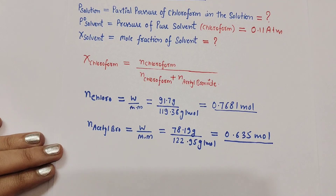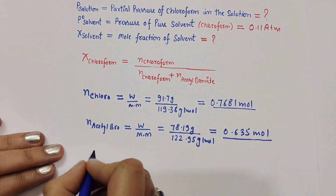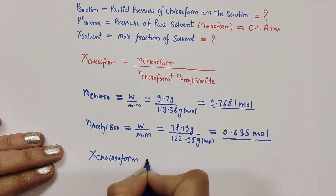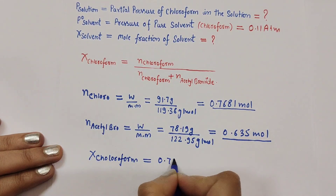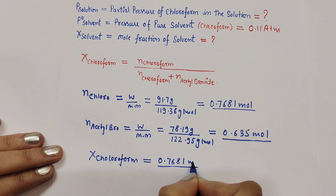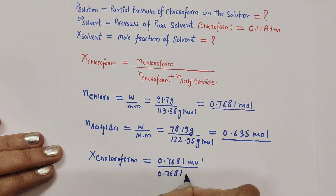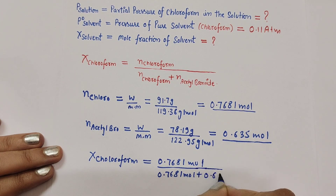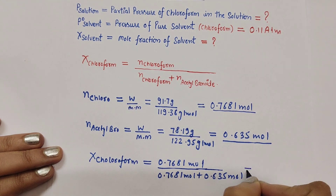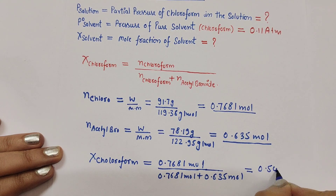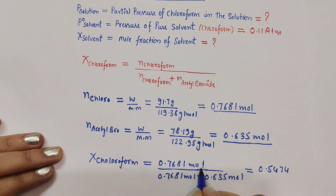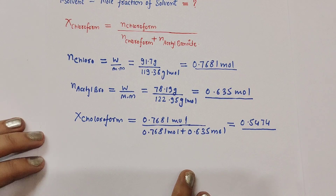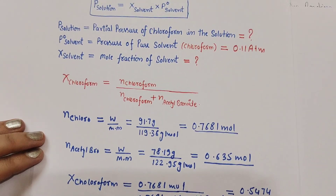Now we calculate the mole fraction of chloroform. X_chloroform = n_chloroform / (n_chloroform + n_acetyl bromide) = 0.7681 / (0.7681 + 0.635). Adding the denominator and simplifying, the mole fraction of chloroform comes out to be 0.5474. Note that mole fraction is a unitless quantity.